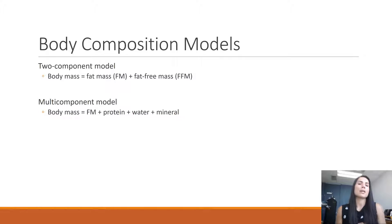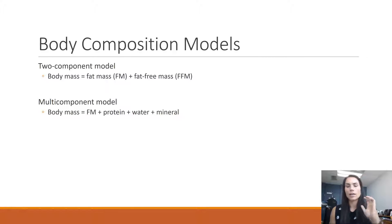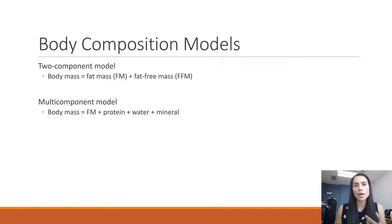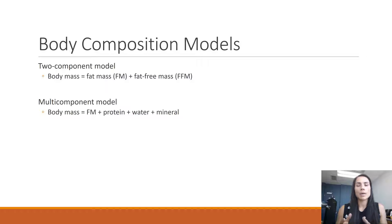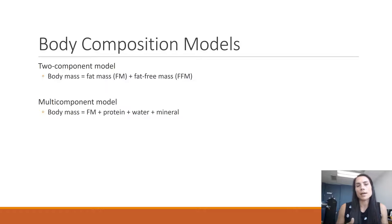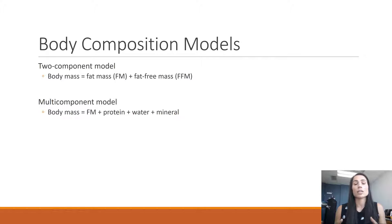There are two primary models used in our field: the two-component model and the multi-component model. The two-component model is the more simplistic model and it basically says body mass is made up of fat mass and fat-free mass, and there are a lot of assumptions that go into what fat-free mass is.